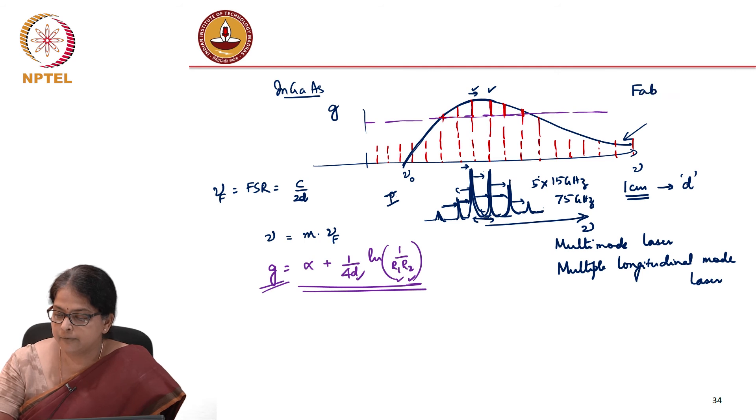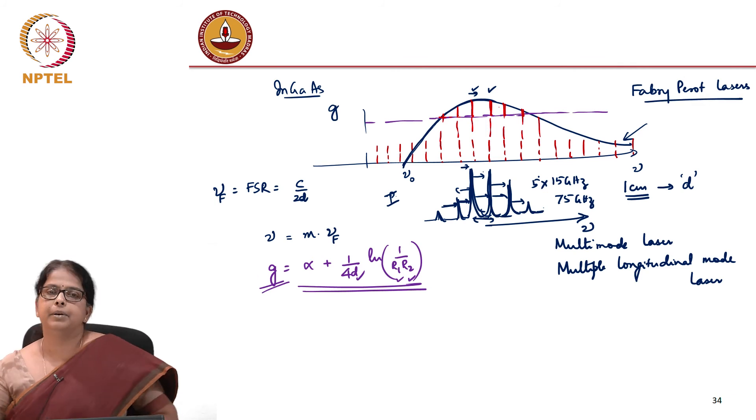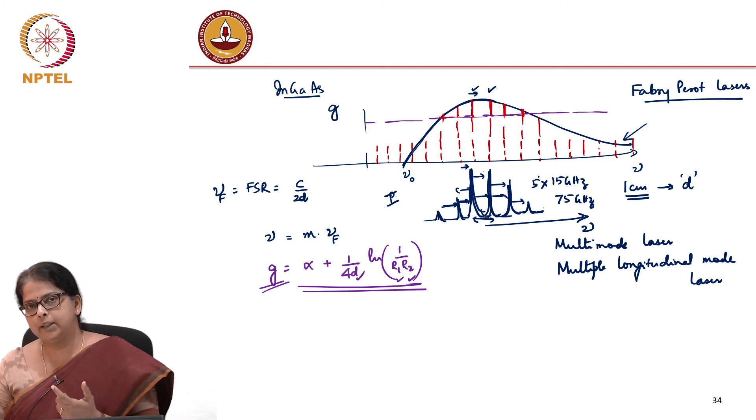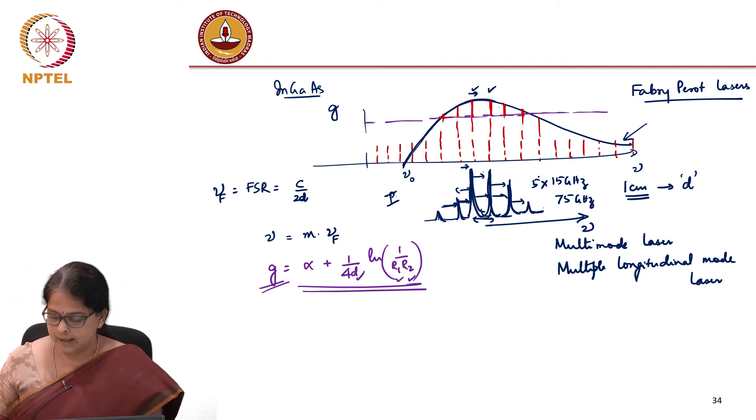In fact, if you look at Fabry-Perot lasers that are available in the market, they are typically broadband lasers, and they are multi-longitudinal mode lasers. You need to do something special to make sure that only one longitudinal mode is allowed by the system, and those are called as SLMs, single longitudinal mode lasers.